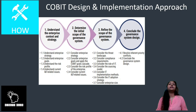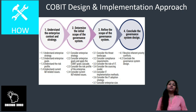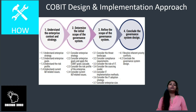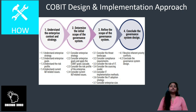The next step is determining the initial scope of the governance system, which involves looking at the risk profile of the enterprise — including the project life cycle, the IT expertise of the organisation, hardware and software failure incidents, and IT-related issues such as security breaches. After that, refining the scope involves examining the threat landscape, which could be high — for example, in geopolitical situations — or low, as well as compliance considerations. This concludes with the governance system design.